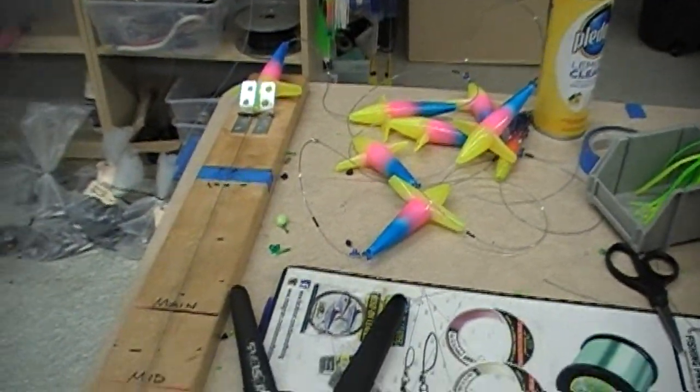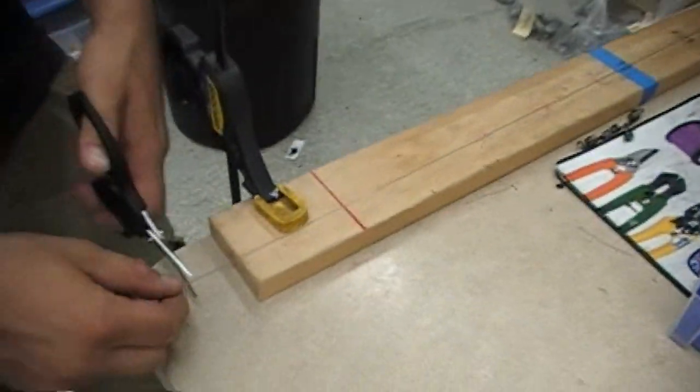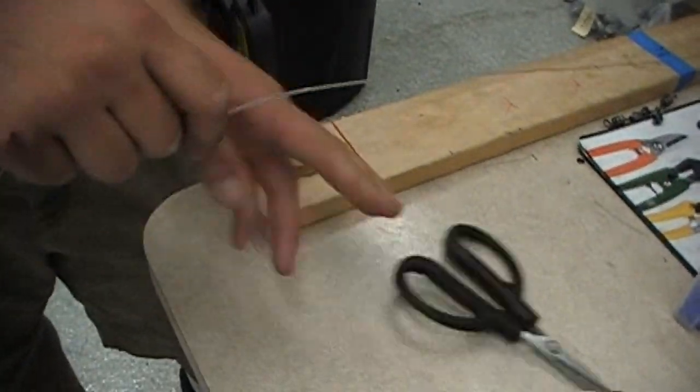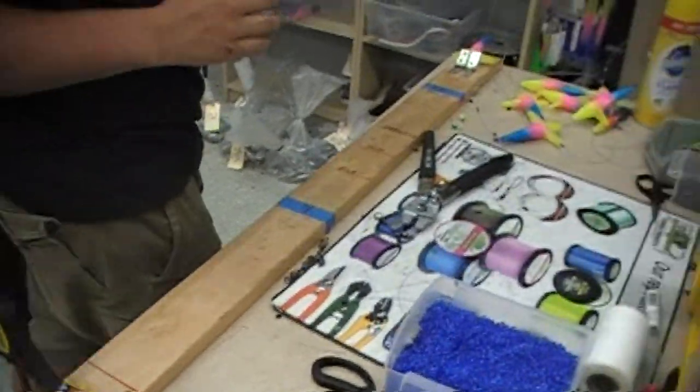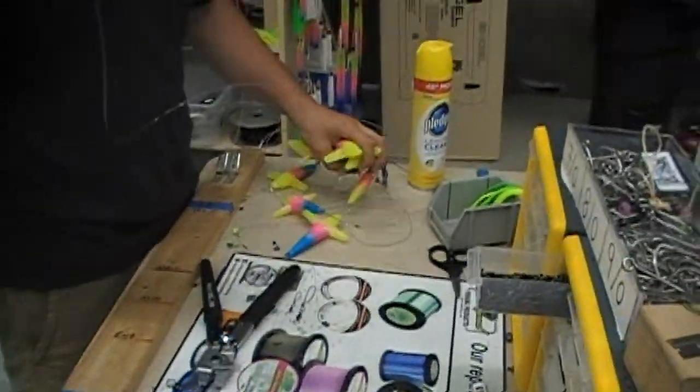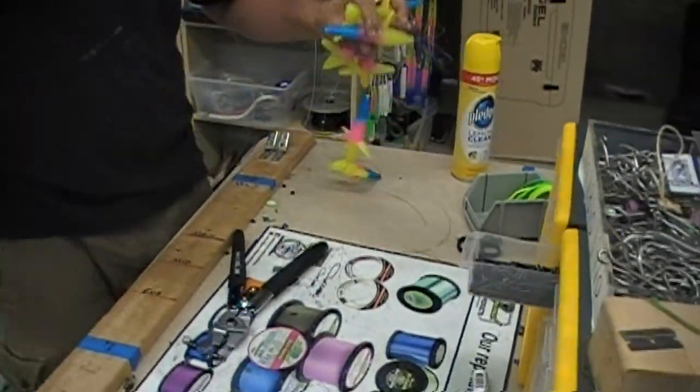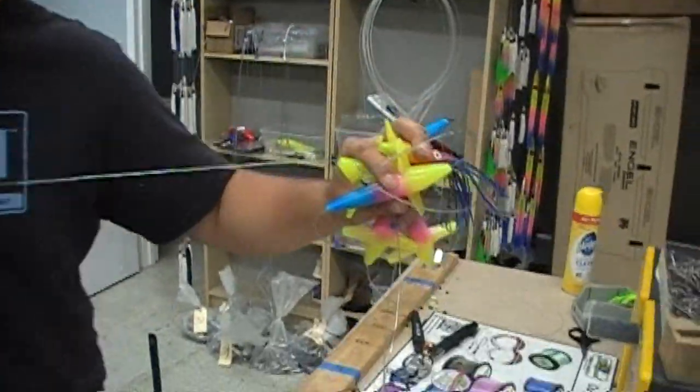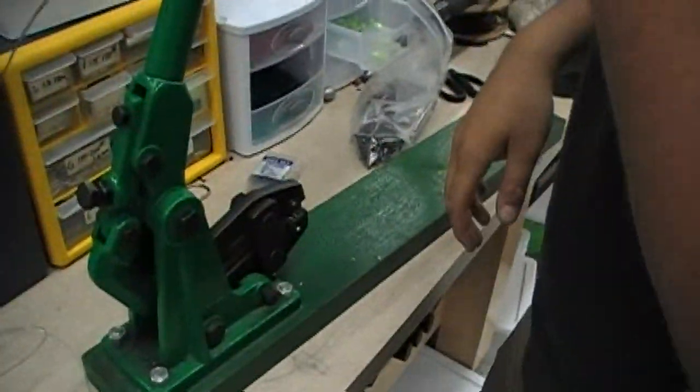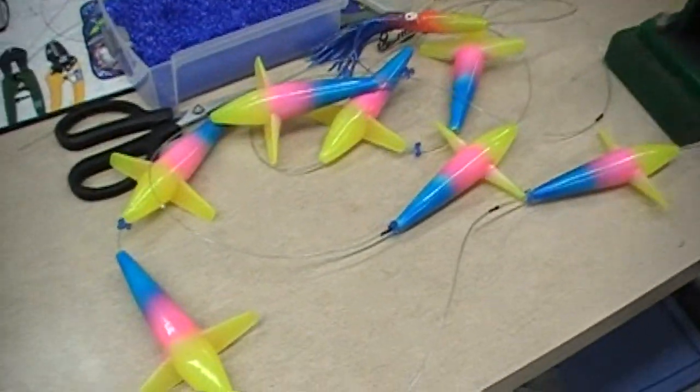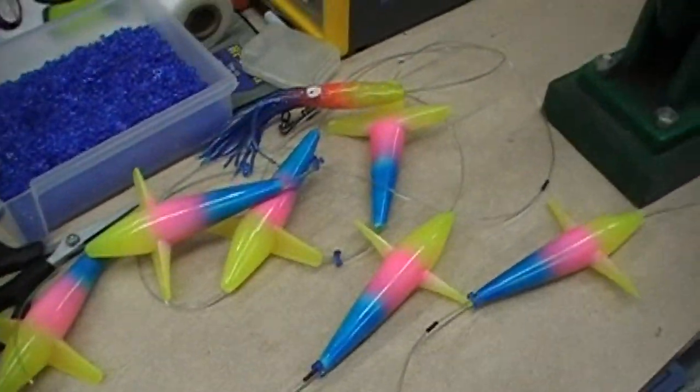And all we have to do now is just cut the mono and put some chafe gear with a loop on the end. So you can hook up your snap swivel. Pick up the chain. I'll show you in a second. Because if I drop it without this crimp on, it's game over. Here we go. F crimp.